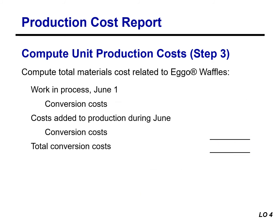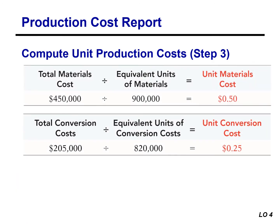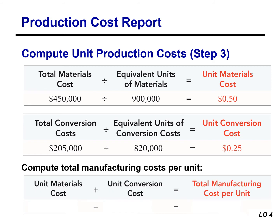For conversion cost, we began the period with $35,000 and incurred an additional $170,000 during June, for a total conversion cost of $205,000. Taking total conversion cost of $205,000 and dividing by equivalent units of 820,000 — determined in step two — we arrive at a unit conversion cost of $0.25. After calculating unit material cost and unit conversion cost, we calculate the total manufacturing cost per unit, which is simply the sum: $0.50 plus $0.25 equals $0.75. Total costs are $655,000.